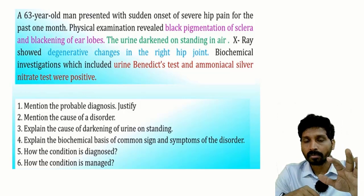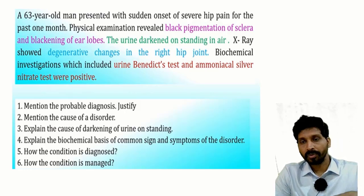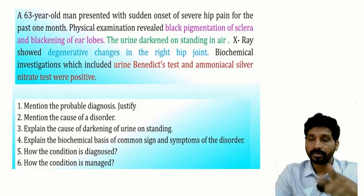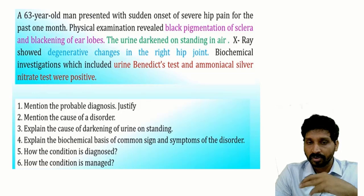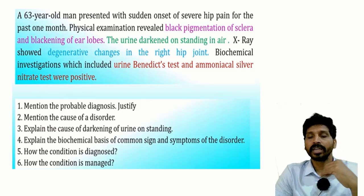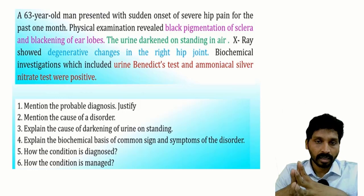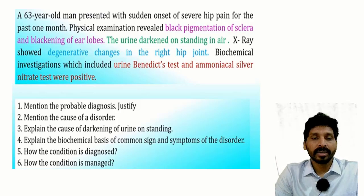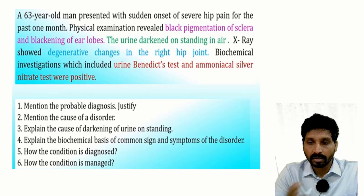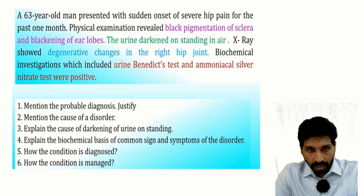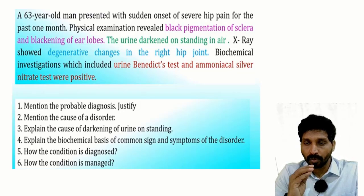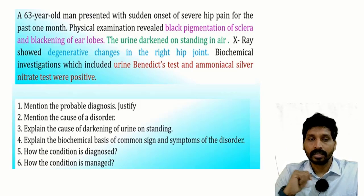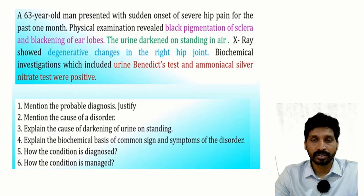Based on this case, the probable questions you should ask yourself are: What is the probable diagnosis and justify it? What is the cause of the disorder? Explain the cause of darkening of urine — normally urine does not darken on standing in air. Explain the biochemical basis of common signs and symptoms. How is the condition diagnosed and managed? Being aware of these questions makes it easy to answer however the case is presented.